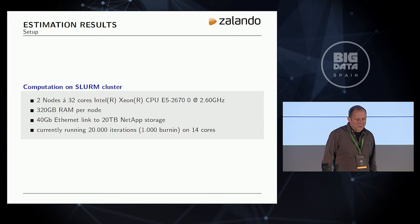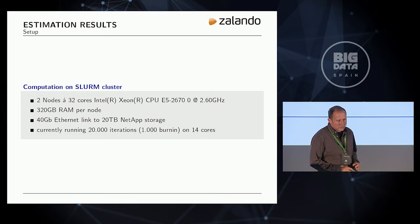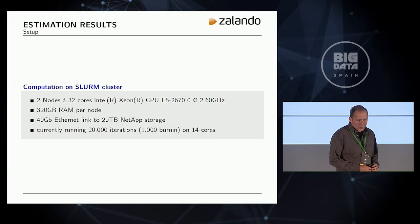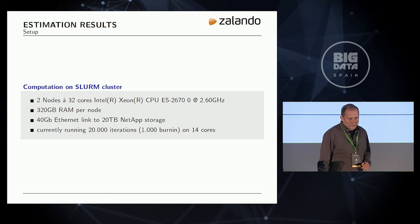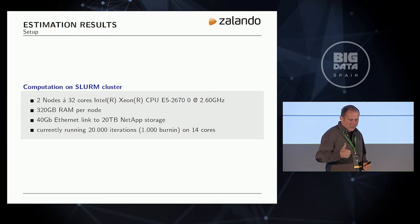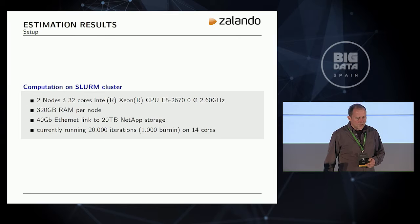We run this on a Slurm cluster with two nodes, 32 cores, and 320 gigabytes of RAM per node, with NetApp storage for input and output data. We currently run 20,000 iterations using 1,000 burn-in iterations, which are necessary to first saturate the training of the hyperparameters and allow the Gibbs sampling to come to a steady state.